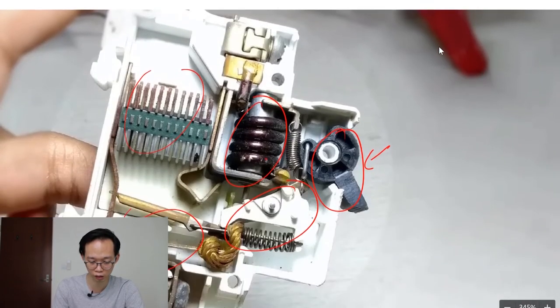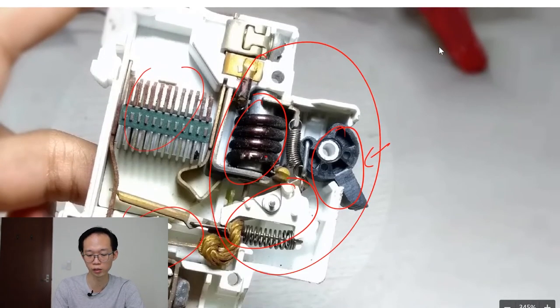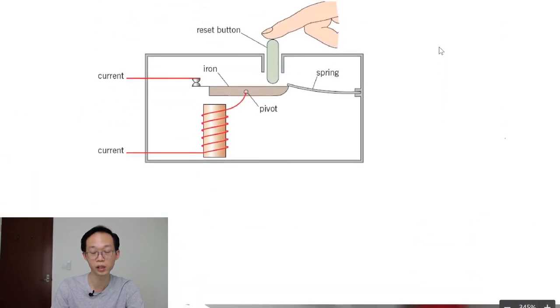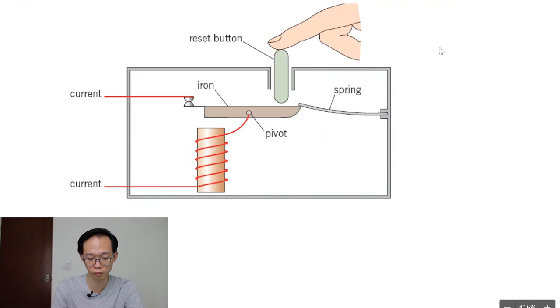So this diagram is a very simplified representation of what's happening inside a circuit breaker. As you can see from the diagram, the current is supposed to flow in here through this contact, through an iron rod like this, and then around a solenoid this way, and then out from the circuit breaker.